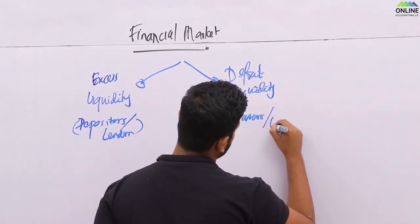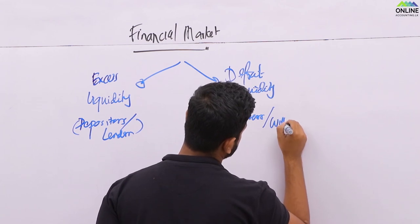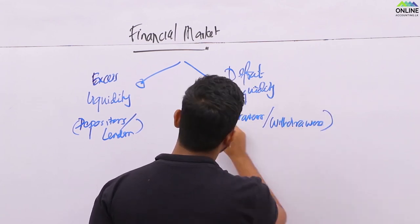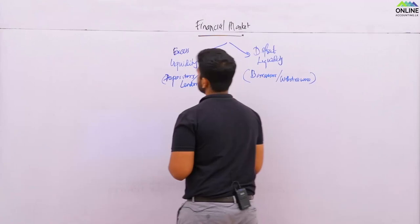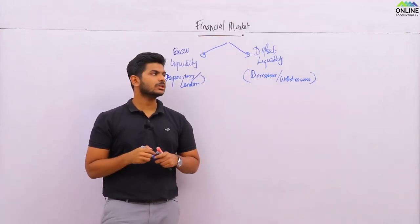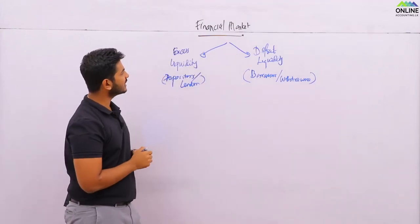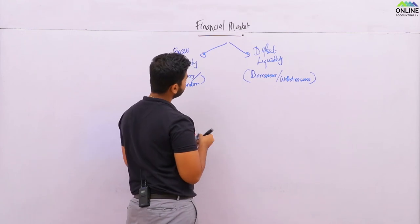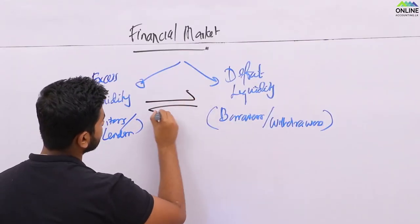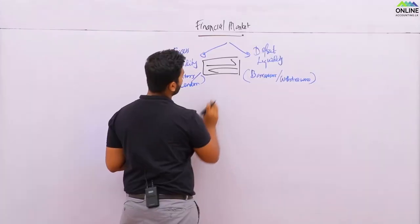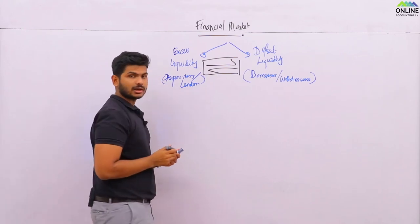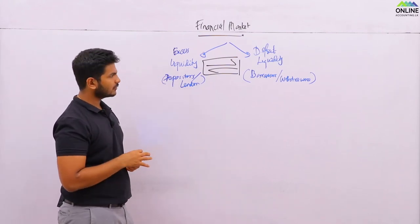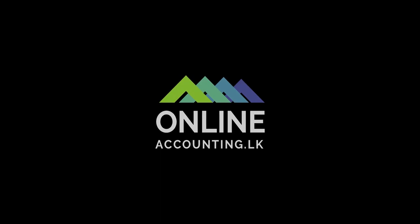Having said that, the place where these two people — savers and borrowers — interact is called a financial market. In a nutshell, that is what you need to know in terms of financial markets.